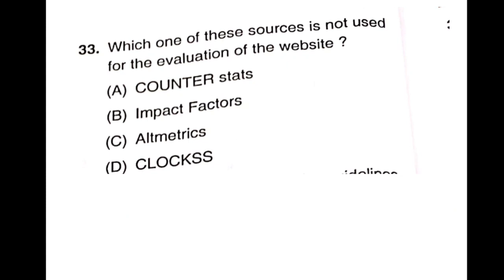Question 33: Which one of these sources is NOT used for the evaluation of websites? The options are Counter statistics, impact factor, altmetric clocks. Impact factor is not used for the evaluation of websites — it is used for journal evaluation.